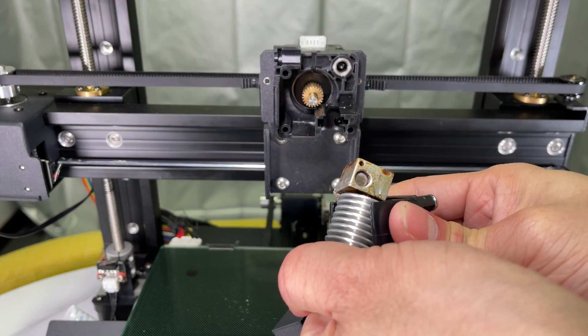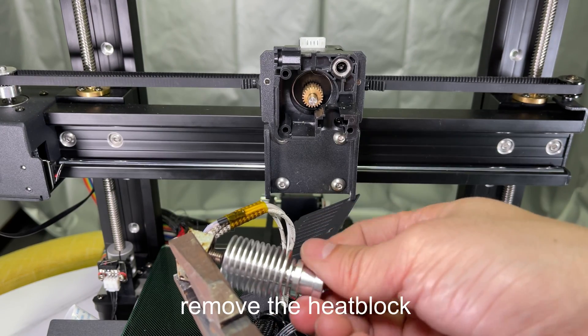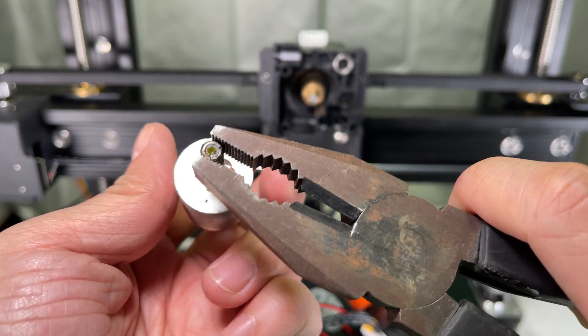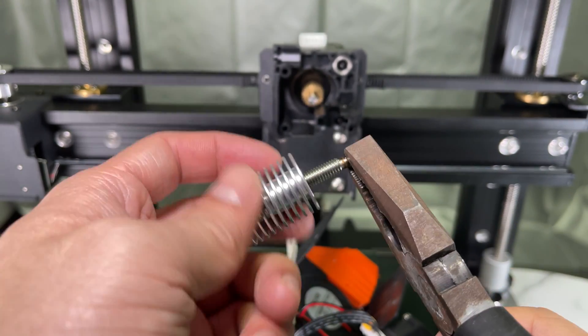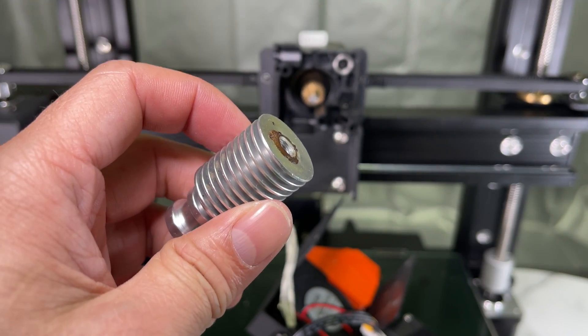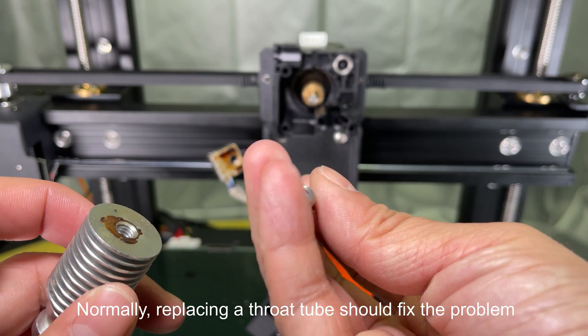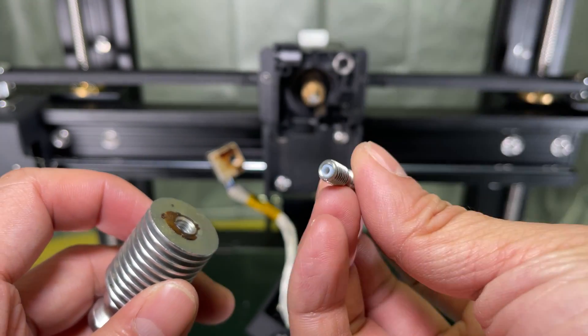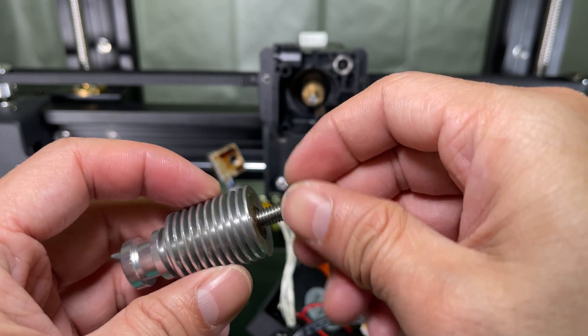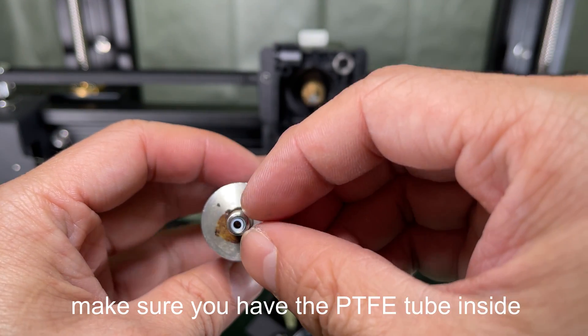Remove the fan. Remove the heat block. Take the throat tube out. Normally, replacing a throat tube should fix the problem. Just get a new one and put it in. Make sure you have the PTFE tube inside.